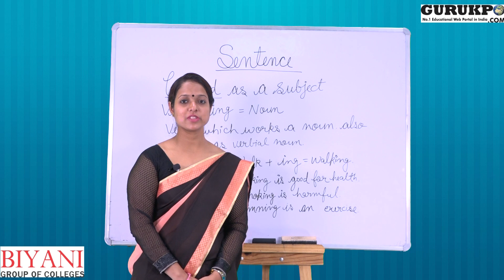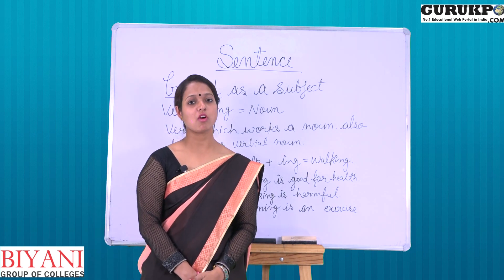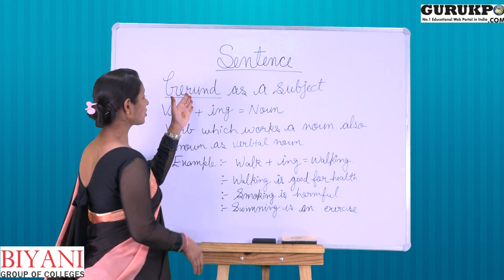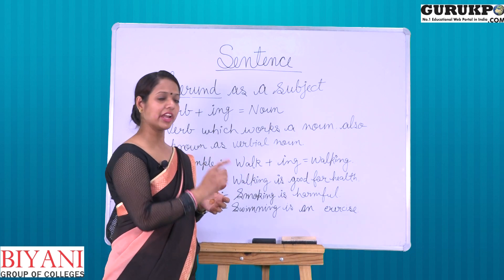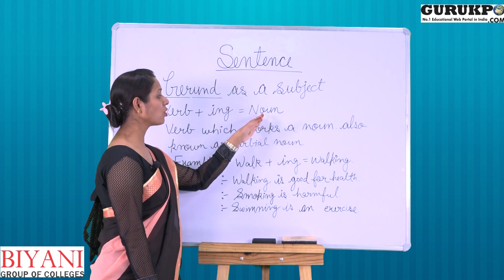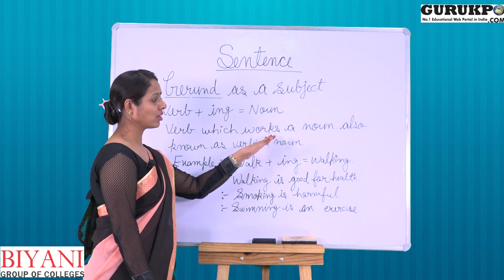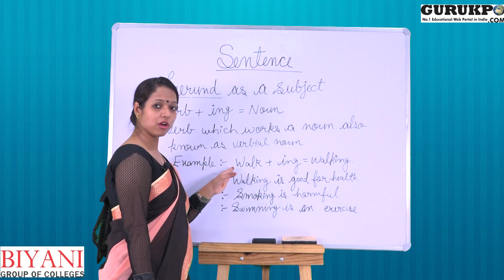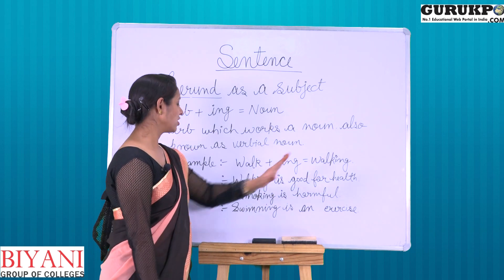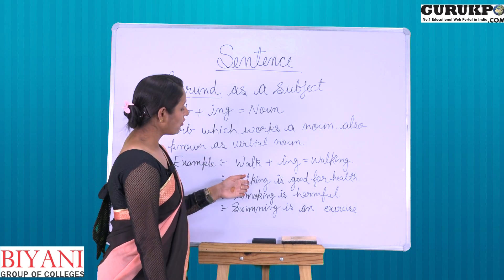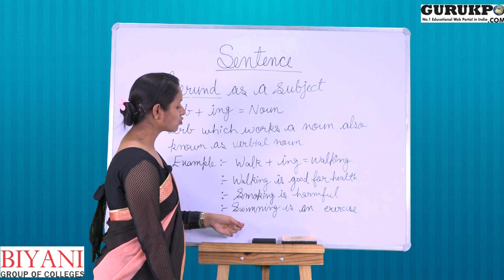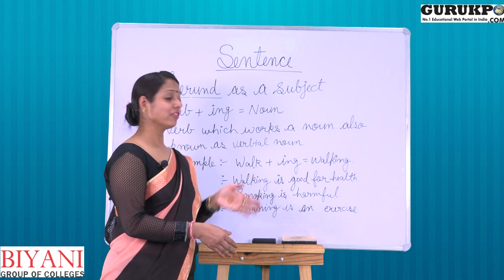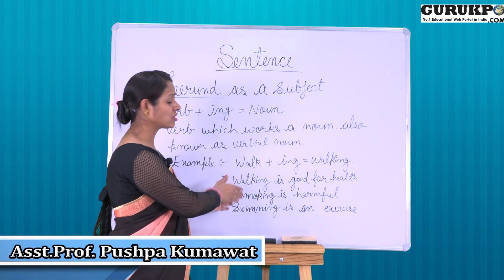Now we will know another type of subject, which is gerund. Gerund is a form of verb which can be used as a noun or as a subject in a sentence. Gerund words have '-ing' added to them — that is, verb plus '-ing.' For example, 'walk' plus '-ing' makes 'walking.' Examples: 'Walking is good for health.' 'Smoking is harmful.' 'Swimming is an exercise.' In all these sentences, 'walking,' 'smoking,' and 'swimming' are verbs working as subjects or nouns by adding '-ing.'